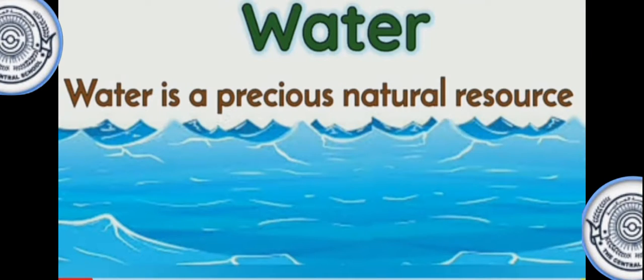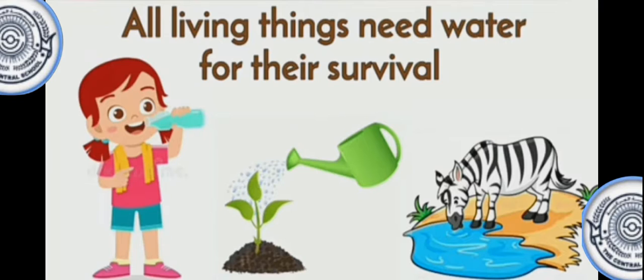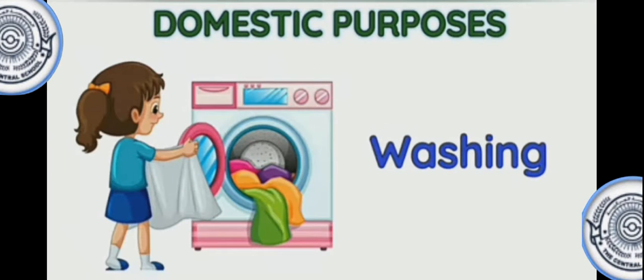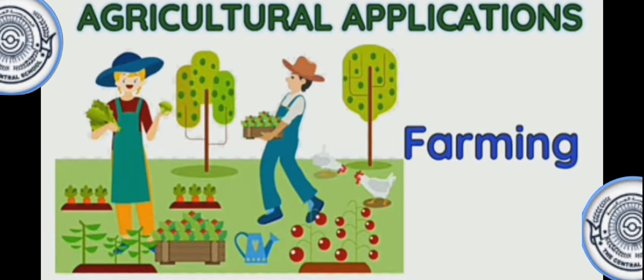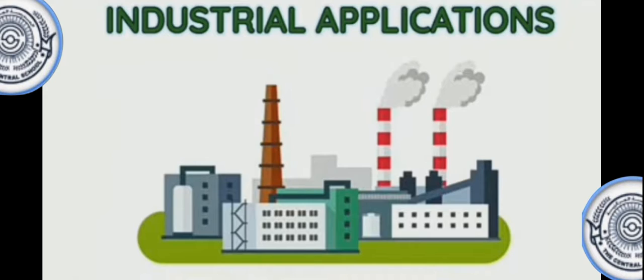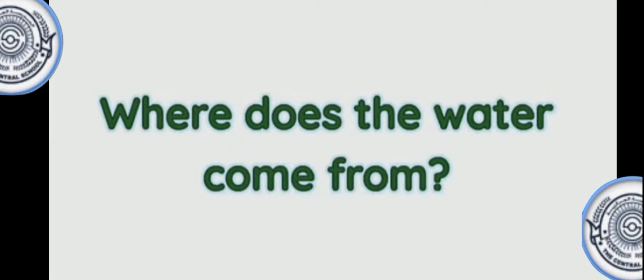Water is a precious natural resource. All living things need water for their survival, to live and grow. We use water for many things such as drinking, washing, gardening, etc. Water is also used for agricultural and industrial purposes. Where does the water come from?